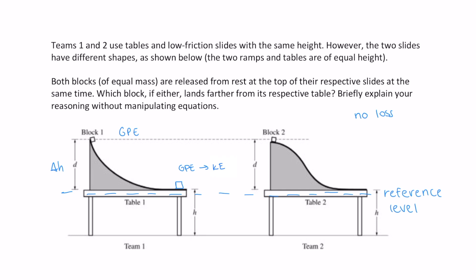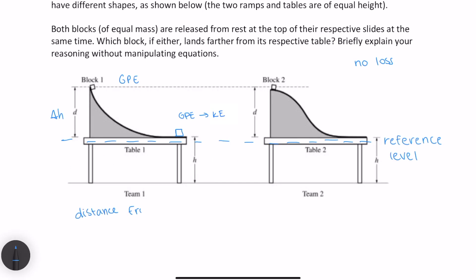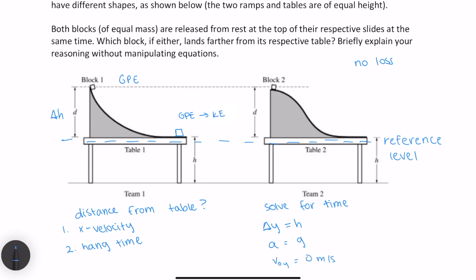Furthermore, because both blocks start at rest, both blocks will have the same amount of kinetic energy when they reach the end of the table. Now that we've established this, we need to think about kinematics — how do we determine how far a block will land from the table? That's going to depend on how fast the block is going in the X direction and how long it stays in the air. Since we know that both travel through the same Y displacement H, experience the same acceleration due to gravity, and leave the table with a Y velocity of zero meters per second, both blocks must remain in the air for the same amount of time.